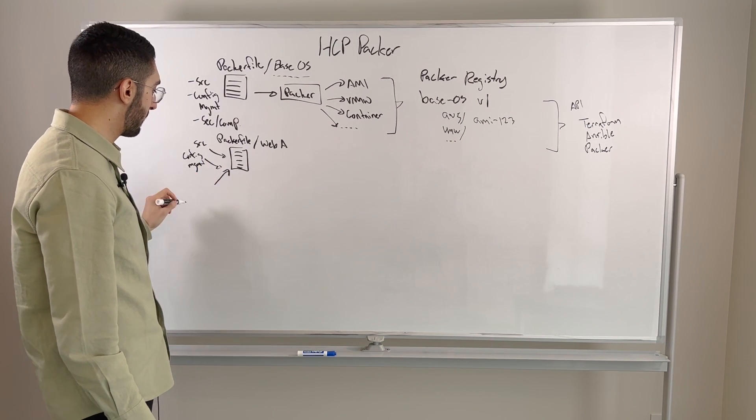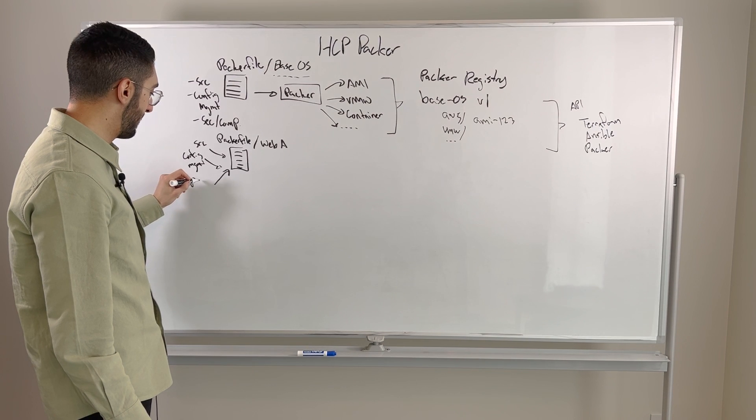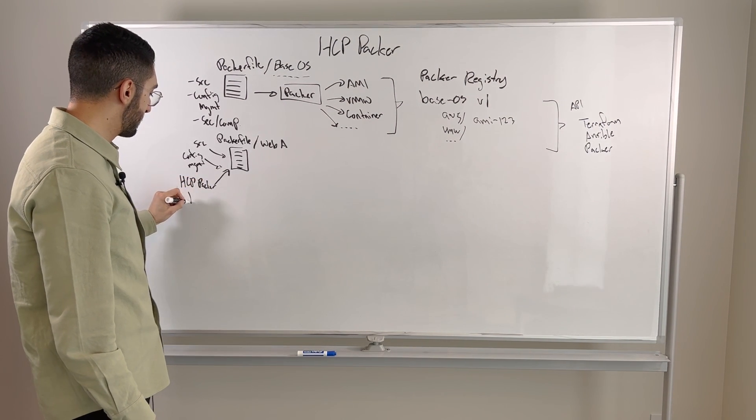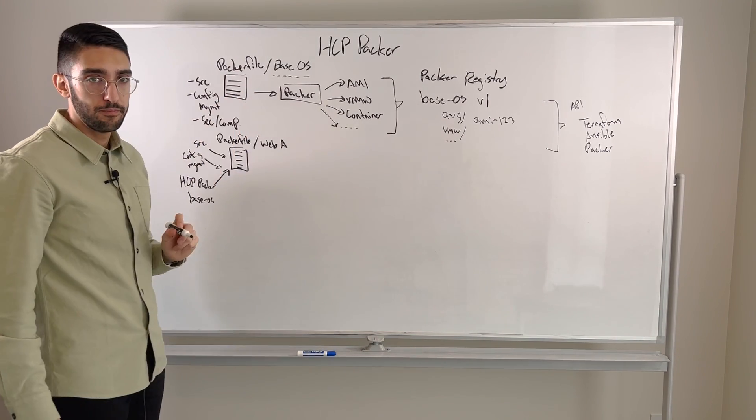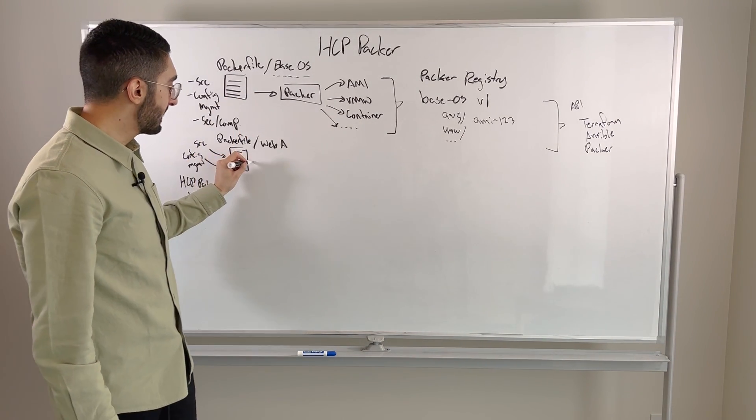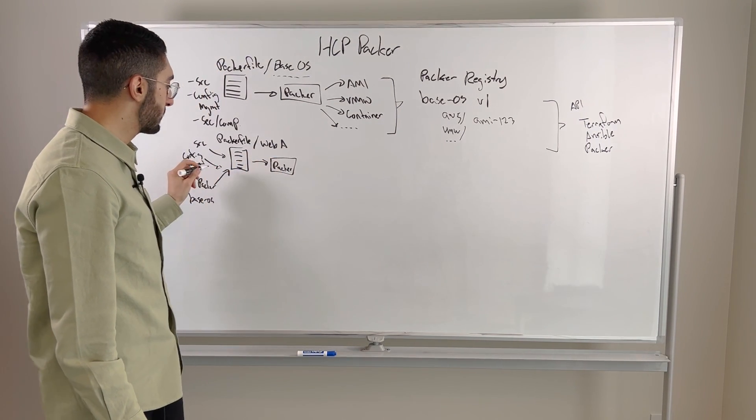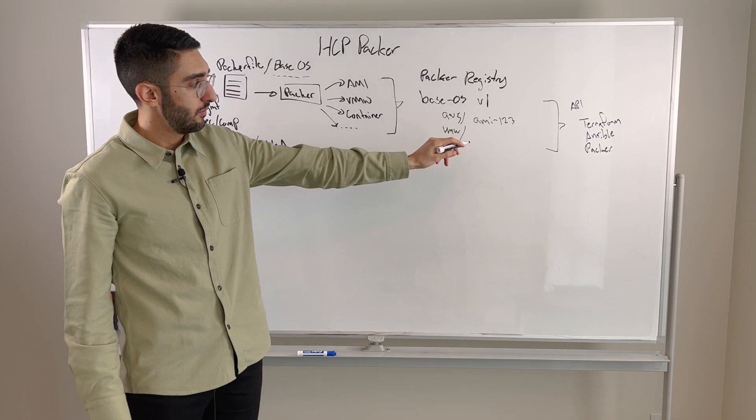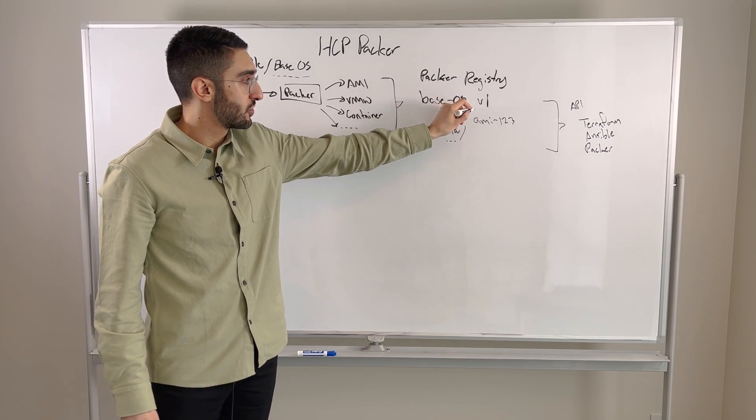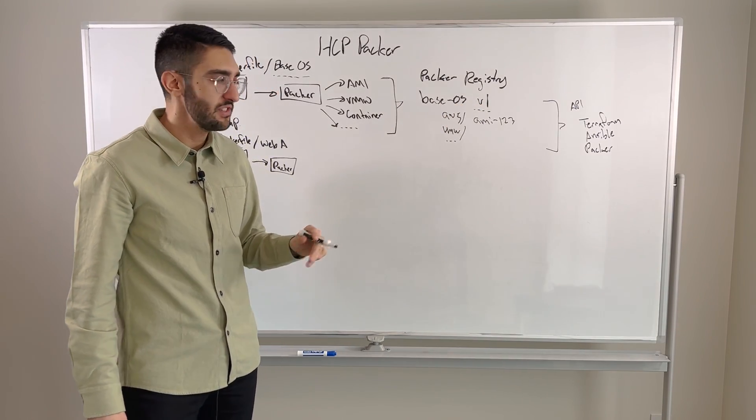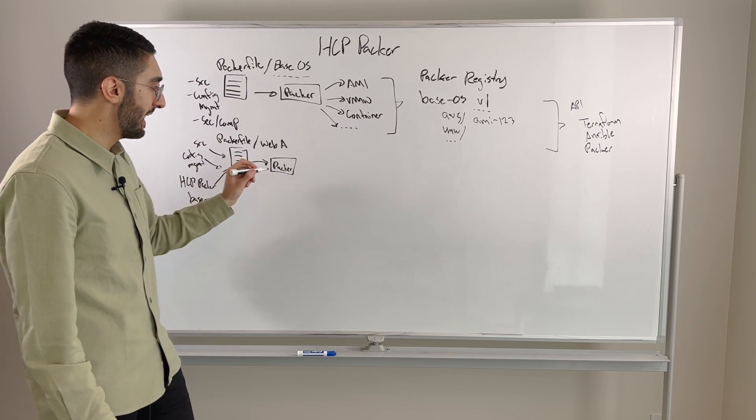So we actually say, I want a source from that Packer registry. So I'm going to read from HCP Packer my base OS and I want to build it off of the latest version. So now when we execute this Packer pipeline, we feed that into Packer, it's going to go and read through that API and say, give me the latest version, in this case, version one of my base OS. I'm going to use that as the starting point upon which I'm going to then build web application A.